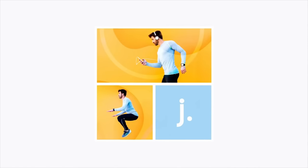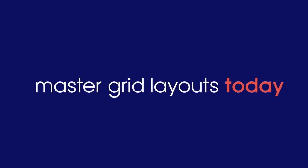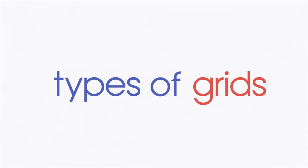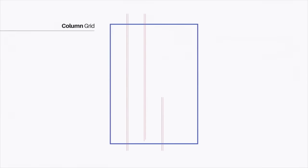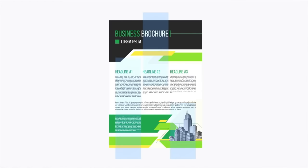A grid creates a connection between the different elements that make up your design, providing a sense of order to your page layout and giving the reader or viewer a clear structural reference to fall back on. This also increases the success of your design. Column grids utilize columns by creating areas that run down the page and are typically used in magazines, brochures, and websites.